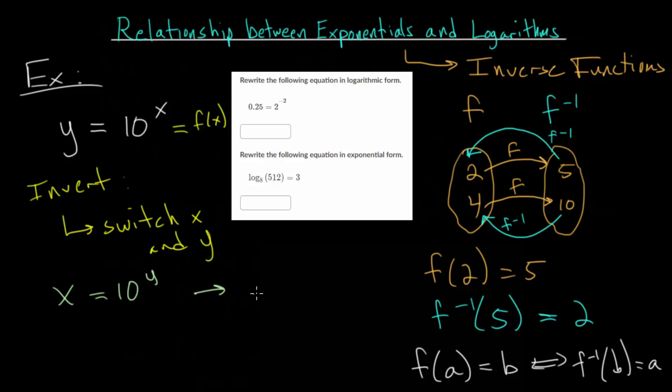And our next step to find that inverse function, we need to solve for y. So to do that, since y is in the exponent, we can rewrite this as a logarithm. Remember that when you're rewriting a logarithm, the base of the logarithm is always the base of your exponential expression. So this will be a log base 10, which is the common log.